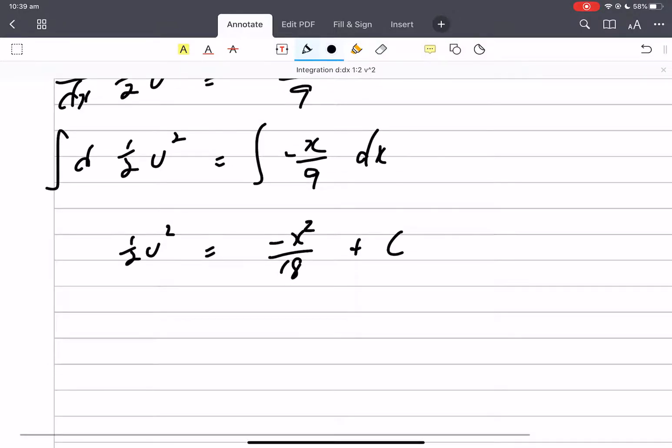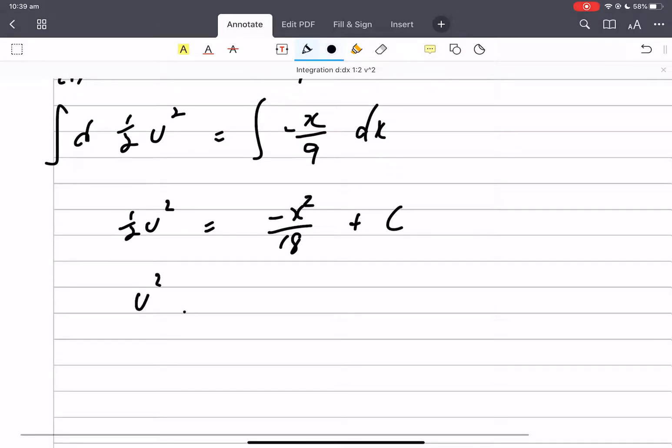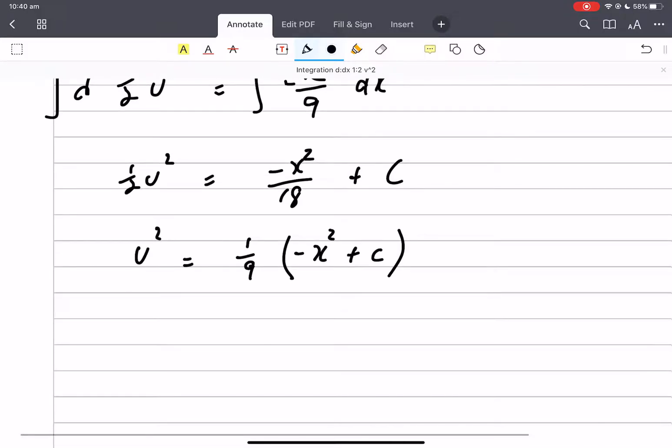Let's go with v squared. V squared multiplied by 2 equals minus x squared plus c. Because that 9 is a square number, v equals a third root c minus x squared.